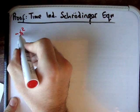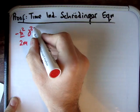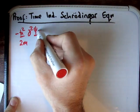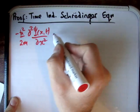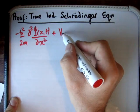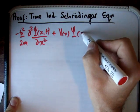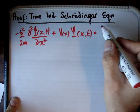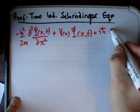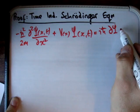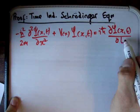The Schrödinger equation says that we have negative h-bar squared over 2m times del squared psi of x and t, del x squared, plus V of x times psi of x and t, is equal to i times h-bar times del psi of x and t, del t.